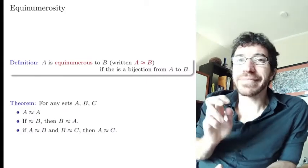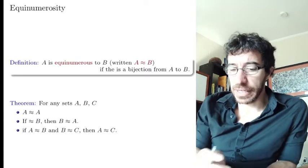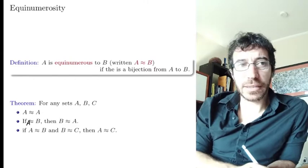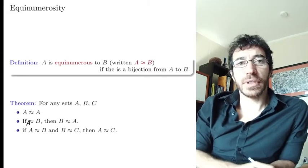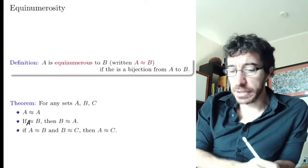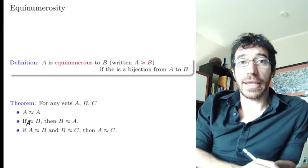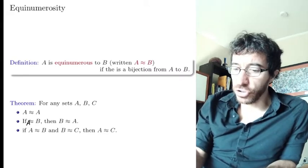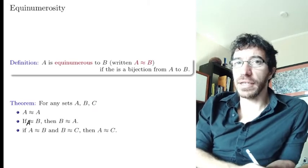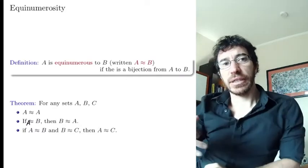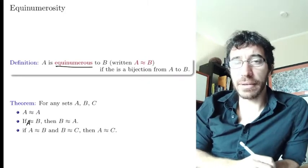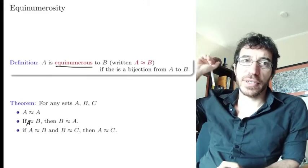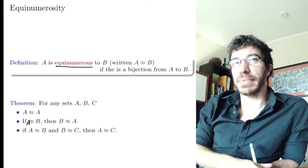This is a nice equivalence-relation-like relation. Every set is equinumerous to itself because the identity is a bijection from a set to itself. If A is equinumerous to B then B is equinumerous to A, because the inverse of a bijection is still a bijection. And if A and B have the same size and B and C have the same size, you can compose those bijections to get that A and C are equinumerous. I say 'kind of' an equivalence relation because this relation is defined on all sets — that's a proper class, not a set — so technically it's not an equivalence relation, but it behaves like one.